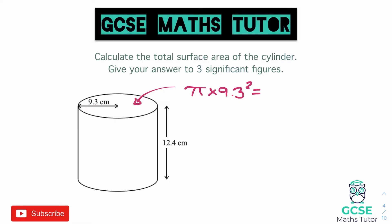Since the final answer needs to be to three significant figures, I'm just going to keep my intermediate answers to about three decimal places — a much higher degree of accuracy than we want in the final answer. It's good practice to write them all down. So we've got 271.716. Obviously we're going to double that since we have two circles, so times by 2 gives us the total area of those two circles.